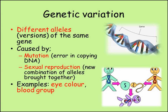Genetic variation within a species is caused by different alleles of the same gene. Remember that an allele is a version of a gene. So the gene for eye colour has several different versions such as blue, brown or green. All humans have this gene, but as there are several alleles of the same gene, there is variation amongst people. Genetic variation comes from mutation, which is an error when DNA is copied, or by sexual reproduction, which can bring new combinations of genes from two parents together.